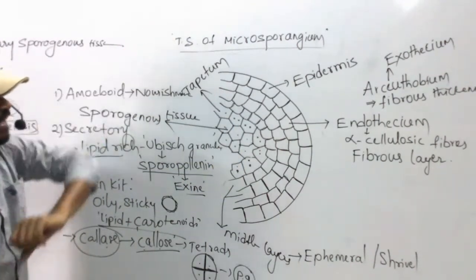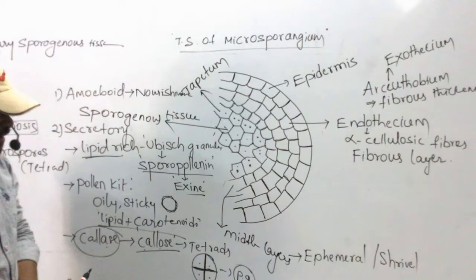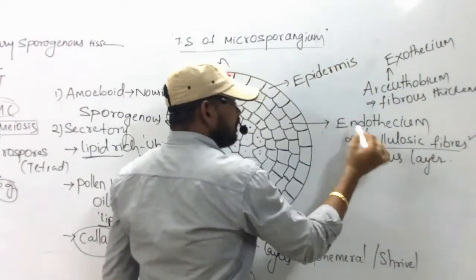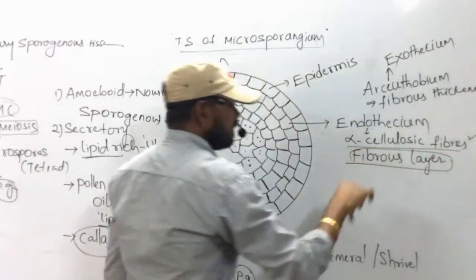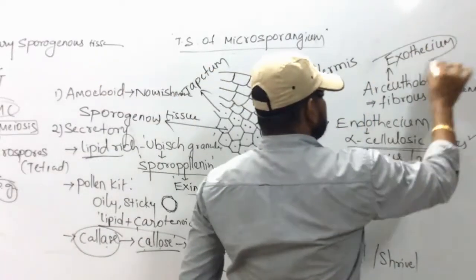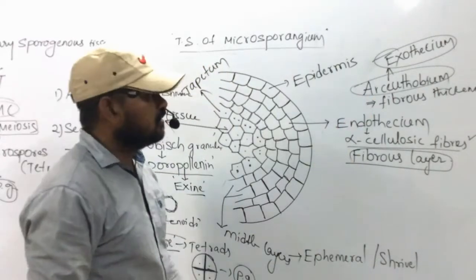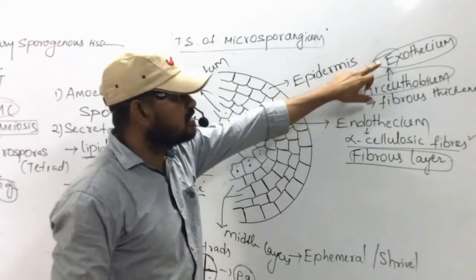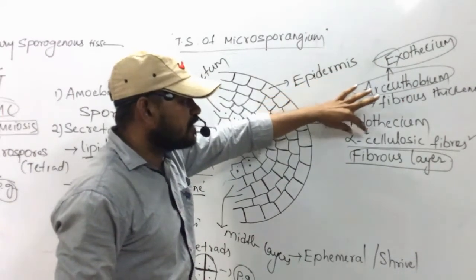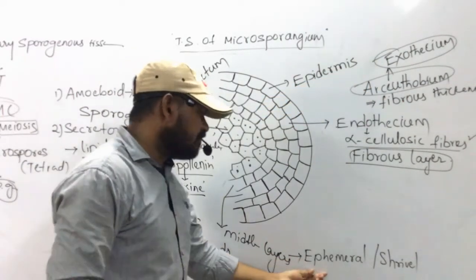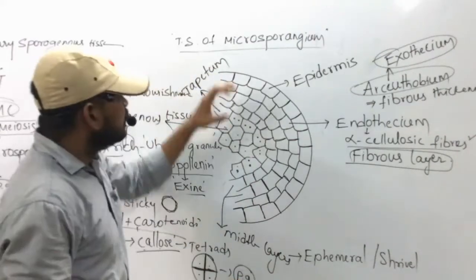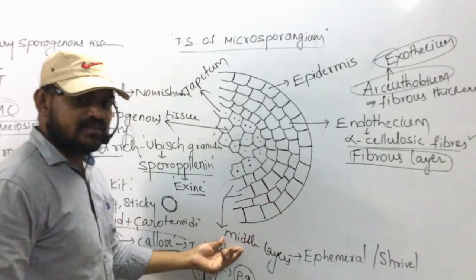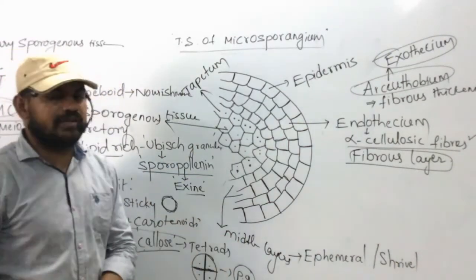This is the structure of the transverse section of microsporangium. To recap: alpha cellulosic fibers are important, and endothesium is also called the fibrous layer. Exothesium is present in the Arcetobium anther, where fibrous thickenings are also present in the epidermis. Middle layers are ephemeral or shrivel at maturity. This concludes the structure of microsporangium.